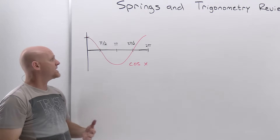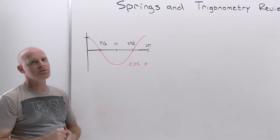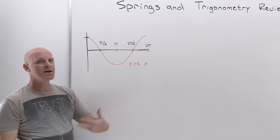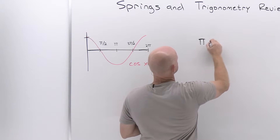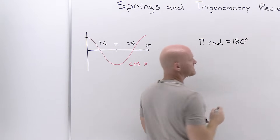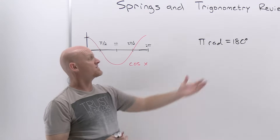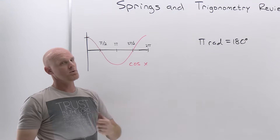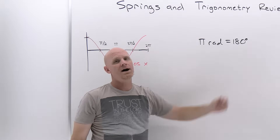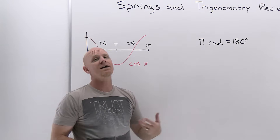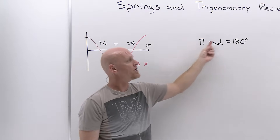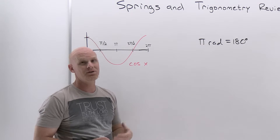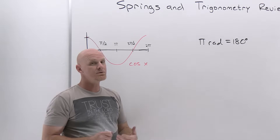We're not looking at this in degrees — we're using radians, which is super important in this chapter. Pi radians equals 180 degrees. To convert from radians to degrees, multiply by 180 over pi; to convert from degrees to radians, multiply by pi over 180. If you're doing any calculations in this chapter, you'll likely need to set your calculator to radians mode.